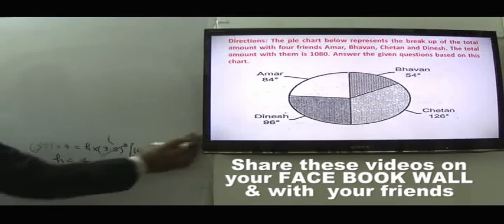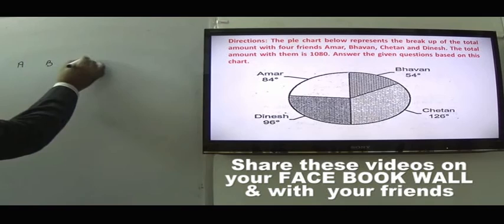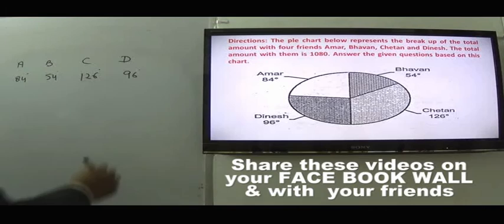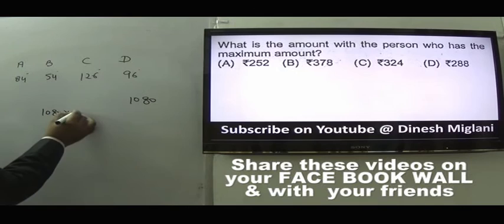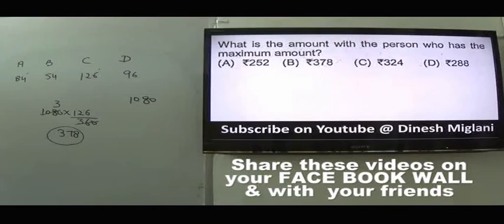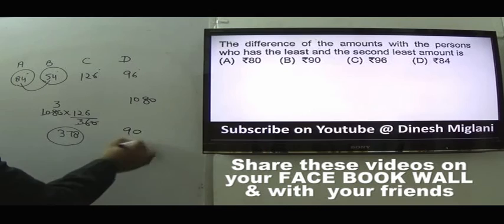Data Interpretation: The pie chart represents the breakup of amounts among four friends A, B, C, D with angles 84°, 54°, 126°, and 96° respectively. Total amount = 1080. Maximum amount is with C: 1080 × 126/360 = 378. Answer is B. Difference between least (54°, B) and second least (84°, A): 1080 × 30/360 = 90. Answer is B.